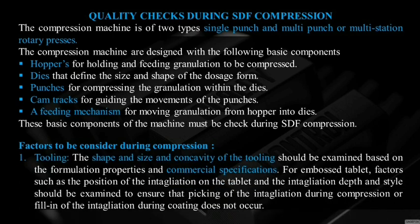Factors to be considered during compression — first is tooling: shape, size, and concavity of the tooling should be examined based on formulation properties and commercial specifications. For embossed tablets, factors such as position of the intagliations on the tablet, intagliation depth and style, should be examined to ensure that picking of the intagliation during compression or filling of the intagliation during coating does not occur. For example, if the letter 'A' is embossed on the tablet, the style and depth of that letter must be checked; during coating, picking and logo filling must not occur.